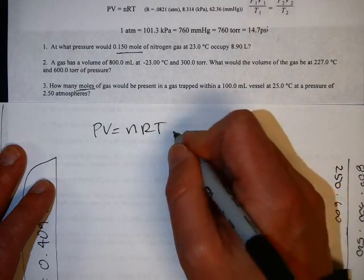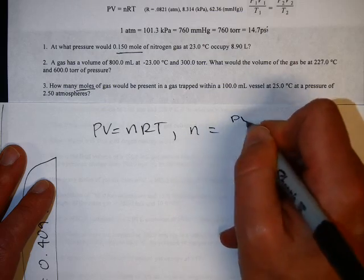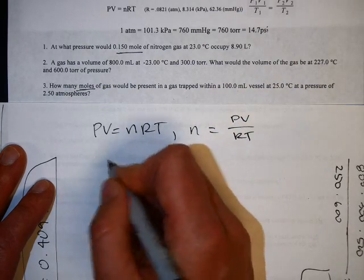You're solving for moles in this case, so if you rearrange that, moles equals PV over RT. Now you can plug in.